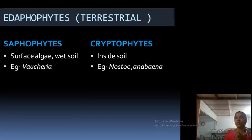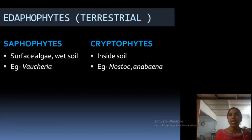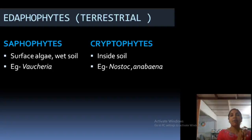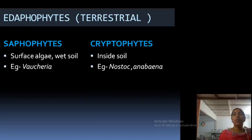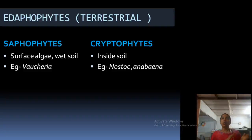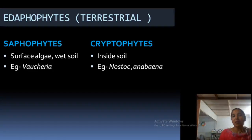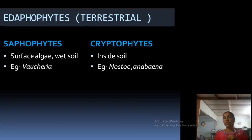Edaphophytes means those growing in the terrestrial site. Two groups are saprophytes and cryptophytes. Saprophytes are known as surface algae — usually observed only on wet soils and surfaces. An example is Vaucheria. Cryptophytes means they are growing inside the soil. Examples are Nostoc and Anabaena — they are present inside the soil. So saprophytes are surface algae present in wet soil, and cryptophytes grow inside the soil.